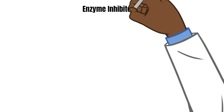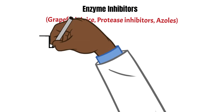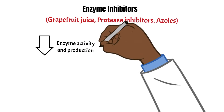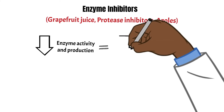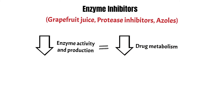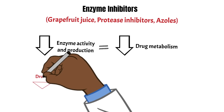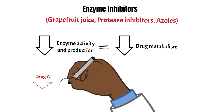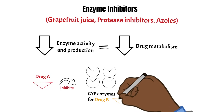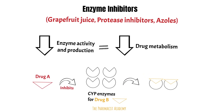Next we have the inhibitors. Here are three common strong inhibitors. Opposite of inducers, inhibitors decrease the activity and production of the CYP enzymes, which will result in a decrease in drug metabolism. So once again, you have a drug that is a CYP enzyme inhibitor — after taking it, it will reduce the production and activity of the enzymes, which will then lead to a decrease in drug metabolism.